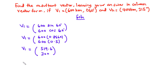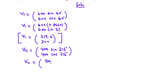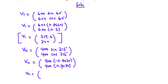Now for v2: v2 equals [400 sin315, 400 cos315]. Sin 315 gives negative 0.7071 and cos 315 is 0.7071. So 400 times negative 0.7071 gives negative 282.84 and 400 times 0.7071 gives 282.84.